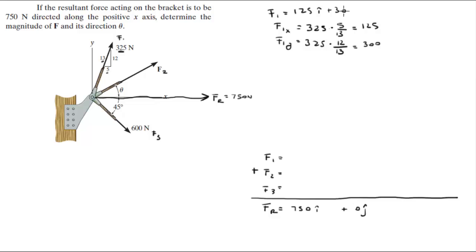F2 we don't know, but we know it has an X component, this is the X component, and a Y component. So let's just put Xi plus Yj.